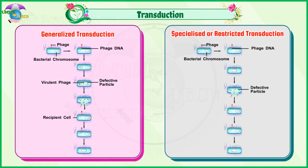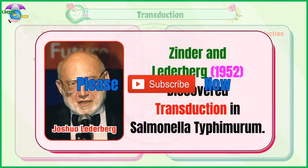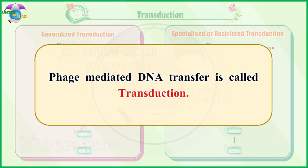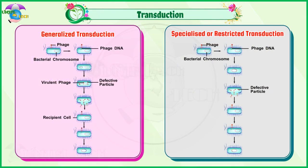Three: Transduction. Zinder and Lederberg, 1952, discovered transduction in Salmonella typhimurium. Phage-mediated DNA transfer is called transduction. Transduction is of two types: generalized transduction, and specialized or restricted transduction.